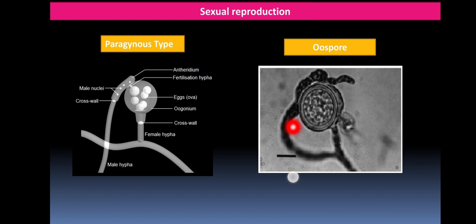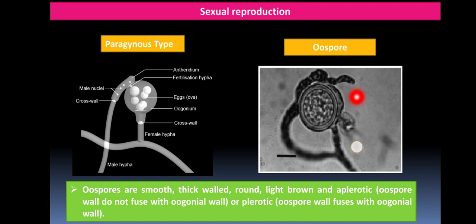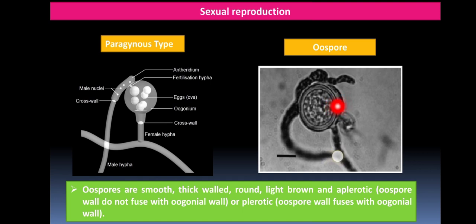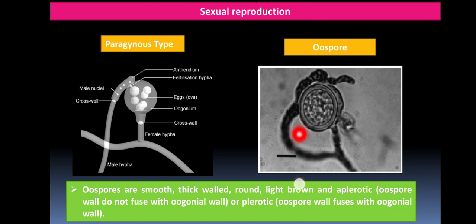The oospore is smooth, thick-walled, round, and light brown in color. Some are apleurotic, meaning the two wall layers do not fuse, whereas in pleurotic types the two walls fuse. The outer wall is called the exine and the inner wall is called the entine. The oospore is a resting spore or sexual spore that can survive in soil for several periods.